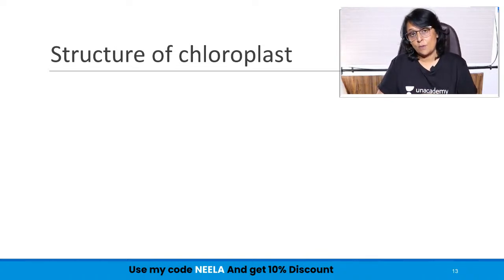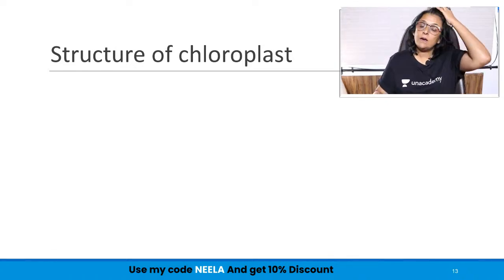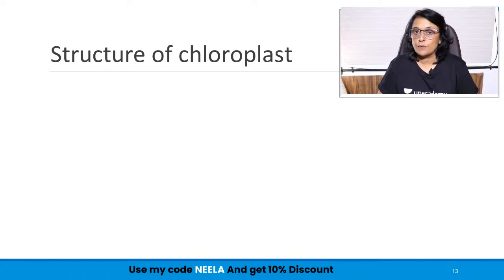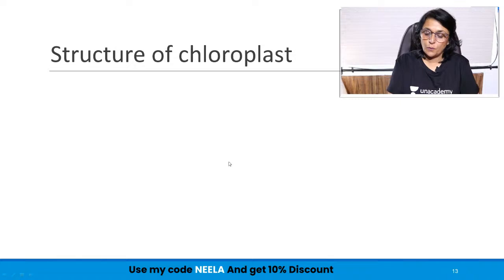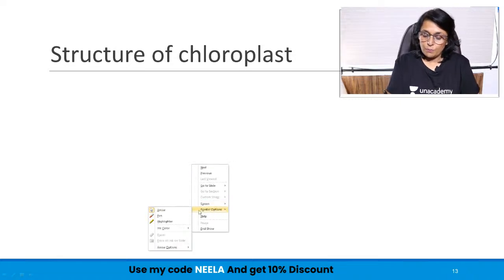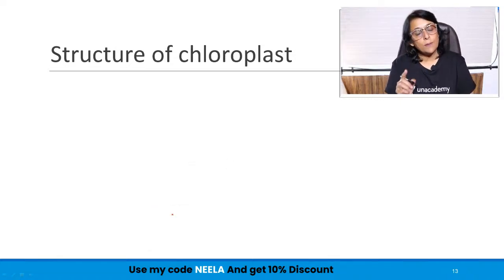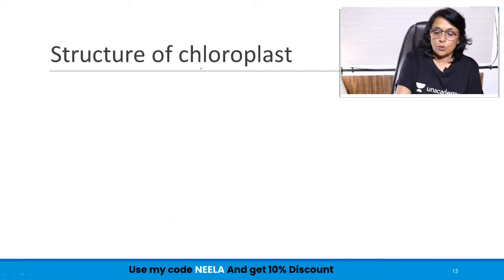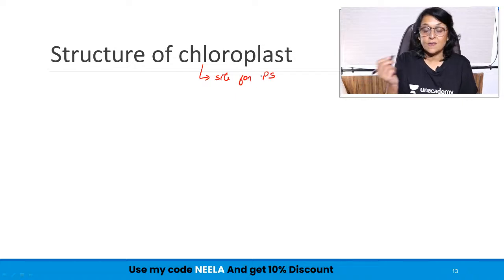Now let us come back to the topic. We are on the photosynthesis chapter. In the previous lecture we talked about the structure of chloroplast, which is the site of photosynthesis. We are going to talk about the same structure in a little more detail. Chloroplast is the site for photosynthesis. The most common shape of chloroplast is oval. It is a double membrane structure — this part we discussed in the previous lecture.